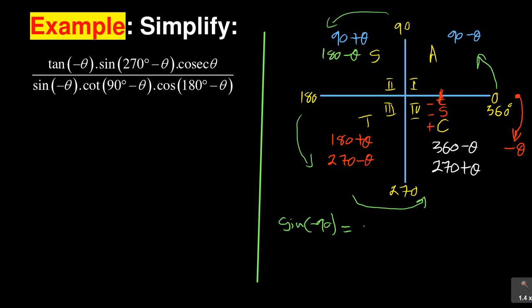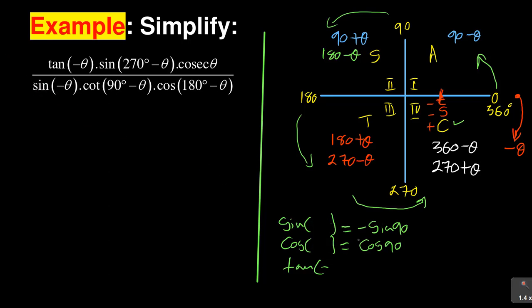So for negative angles: sin(−θ) becomes −sin θ; cos(−θ), because we are in the fourth quadrant and cosine is positive, becomes cos θ; and tan(−θ), because tan is negative in the fourth quadrant, becomes −tan θ. Those are the reduction rules for negative angles.